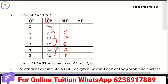AP is equal to TP divided by Q. So: 5 by 1 equals 5. 12 by 2 equals 6. 18 by 3 equals 6. 20 by 4 equals 5. 20 by 5 equals 4. So we have the average product.